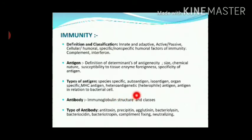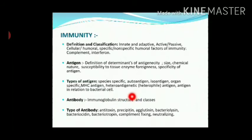The next point is antibody. Types of antibody — antibodies are termed as immunoglobulins depending upon their chemical nature. There are five types: IgA, IgG, IgM, IgE, and IgD. We will make a chart for studying these antibodies during our lecture.